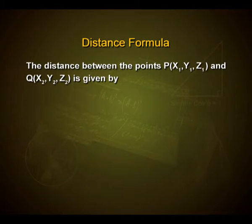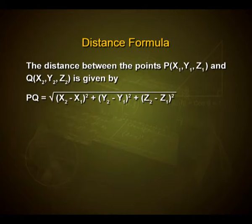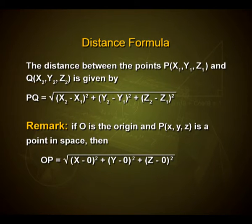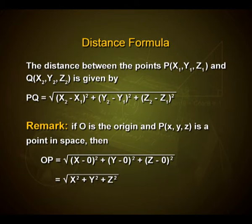The distance between points P(x1, y1, z1) and Q(x2, y2, z2) is given by PQ = √[(x2−x1)² + (y2−y1)² + (z2−z1)²]. Here, if O is the origin and P(x, y, z) is a point in space, then OP = √[(x−0)² + (y−0)² + (z−0)²], which simplifies to √(x² + y² + z²).